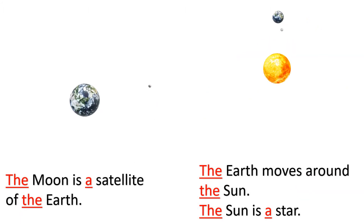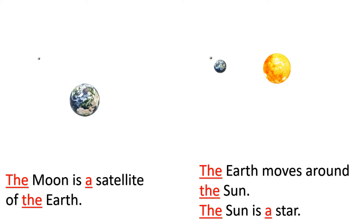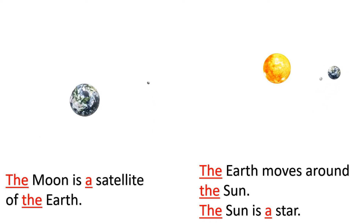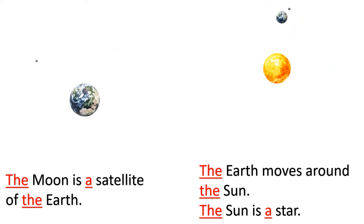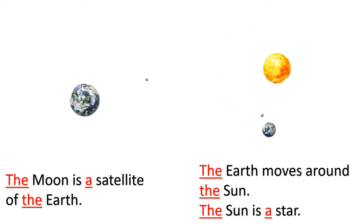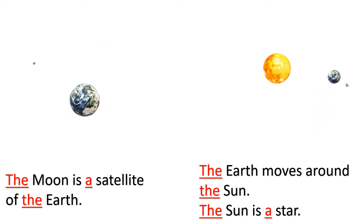'The' is used before proper nouns when these happen to be the names of stars, satellites, and planets. Example: 'The moon is a satellite of the earth.' 'The earth moves around the sun.' 'The sun is a star.'